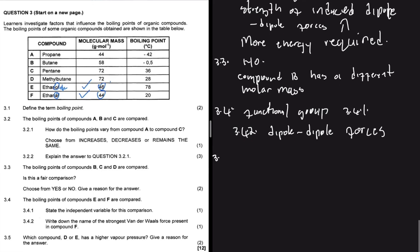Question 3.5 says which compound D or E has a higher vapor pressure? The higher the vapor pressure, the lower the boiling point. So compound D, which is methyl butane, has a boiling point of 28, and then compound E has a boiling point of 78.